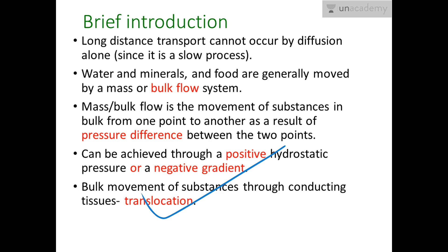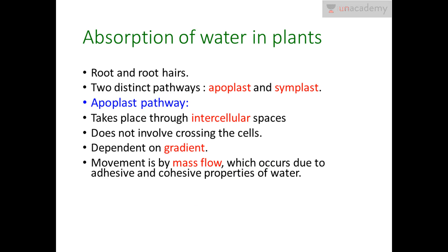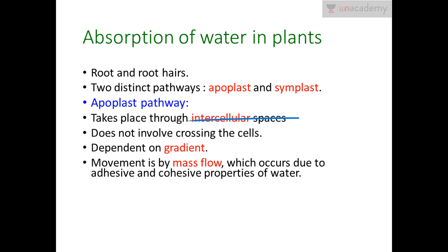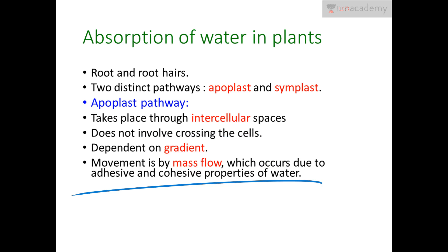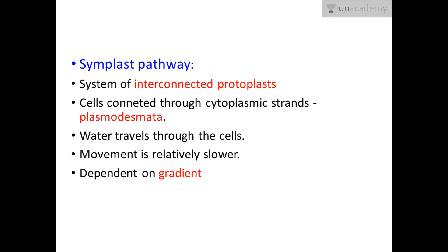Absorption of water in plants takes place through the root, which has two distinct pathways: apoplast and symplast. The apoplast pathway takes place through the intercellular spaces and cell walls. It does not involve crossing into the cells, and movement depends entirely on the gradient. This movement is by mass flow, which occurs due to the adhesive and cohesive properties of water — cohesive being attraction between water molecules, and adhesive being attraction of water molecules to polar surfaces like tracheid elements.